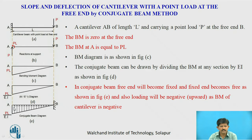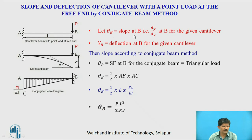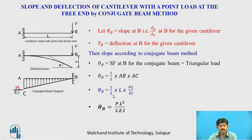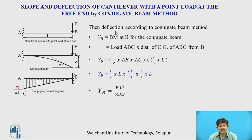Let θB be the slope at B (dy/dx at B) and yB be the deflection at B for the given cantilever. To find the slope at B, we calculate the shear force at B for the conjugate beam. The shear force at B equals the load of the triangular diagram, so θB = (1/2) × base × height = (1/2) × L × (PL/EI), giving θB = PL²/2EI.